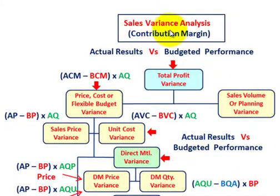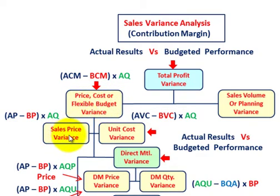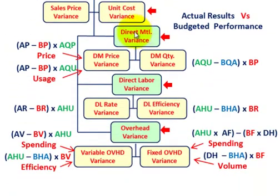Just to go over what we've done here: all these direct materials, direct labor, and overheads end up under some sales variance analysis, and you end up looking at some contribution margin or total profit variance. You're looking at your actual results versus some budgeted performance.